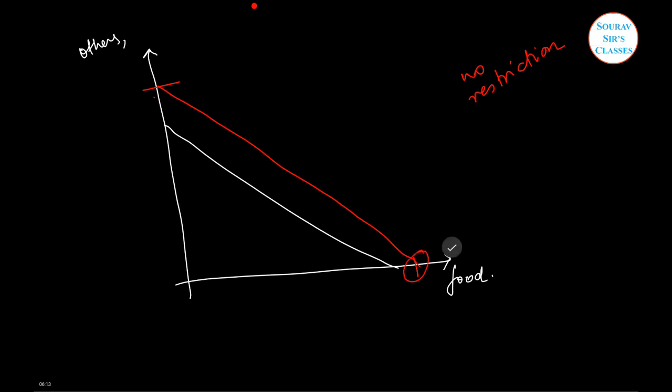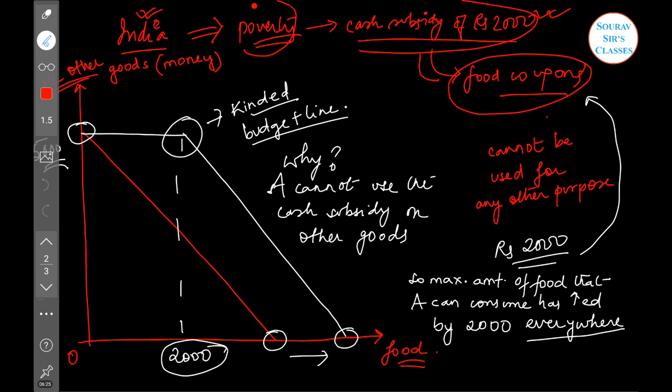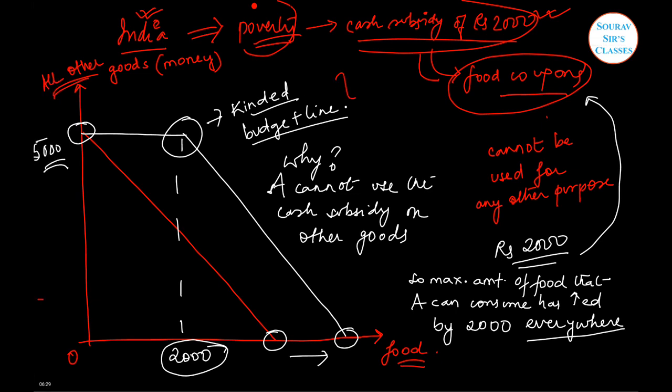Now you can spend this cash subsidy on any particular good. That's why there would have been a parallel shift, but we are actually obtaining a kinked budget line just because of this restriction that it cannot be used for any other purpose.